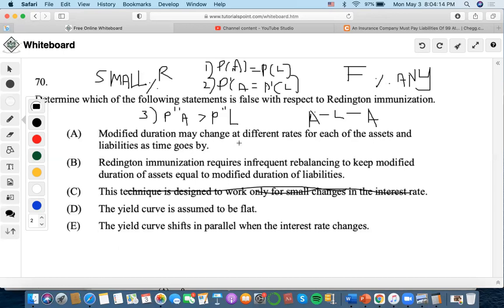So this one is modified duration may change at different rates for each of the assets and liabilities as time goes by. Well, this is using common sense, right? Obviously, duration changes whenever time goes by in general. So this one is out.